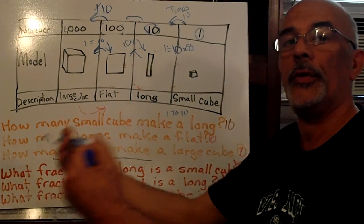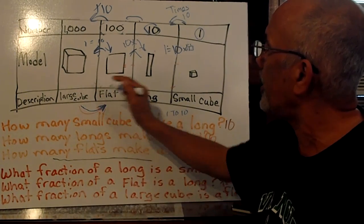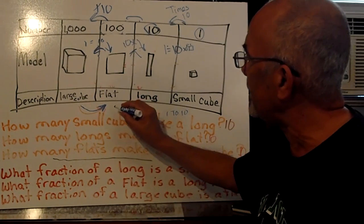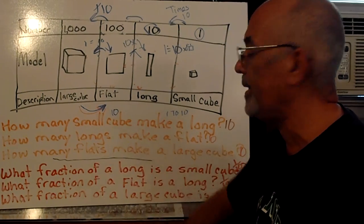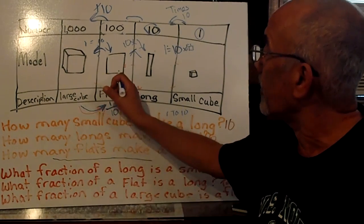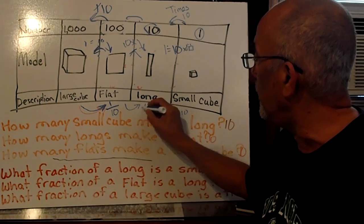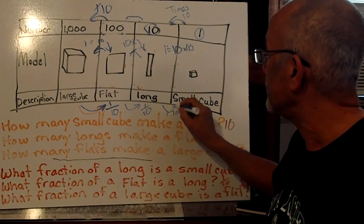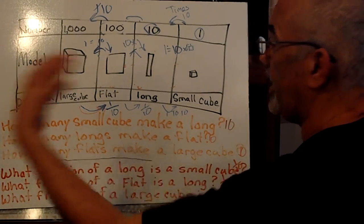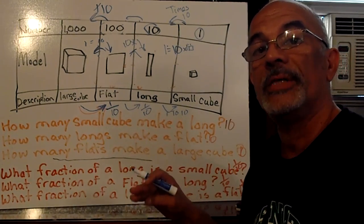Now, another thing is, we can go the other way too. So if I wanted to go this way, what part of a large cube, what part of this large cube is this flat? The flat is, there's 10 flats in that large one, but the flat is only 1. So we have that fraction of 1 tenth. The flat is 1 tenth of the large cube. Same thing holds true for the long, is 1 tenth of the flat. And the small cube is 1 tenth of the long. So if we move from right to left, it's times 10. If we move from left to right, it's 1 tenth.